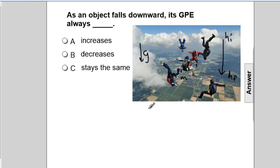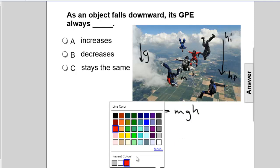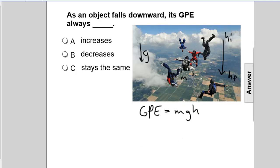Let's write the equation. PE or GPE to be more specific is MGH. And since they're falling down, the height is going down.